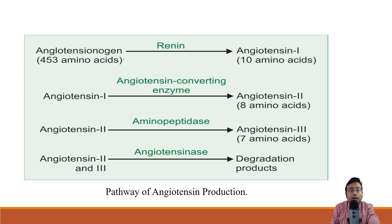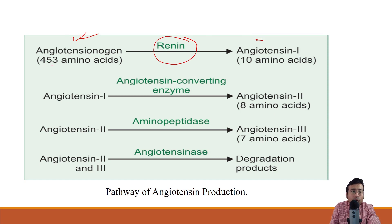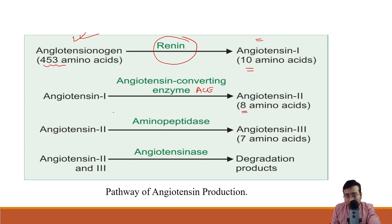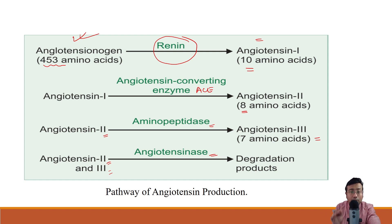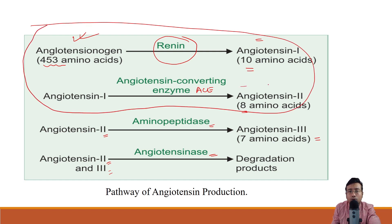Angiotensinogen contains 453 amino acids and is converted to angiotensin 1, which has only 10 amino acids. Angiotensin 1 is converted by ACE to angiotensin 2, which has 8 amino acids. Angiotensin 2 can also be converted to angiotensin 3 by aminopeptidase, and angiotensin 2 and 3 are finally degraded by angiotensinase. For first year students, knowing the pathway from angiotensinogen to angiotensin 2 via ACE is sufficient; PG students must know the full degradation pathway.